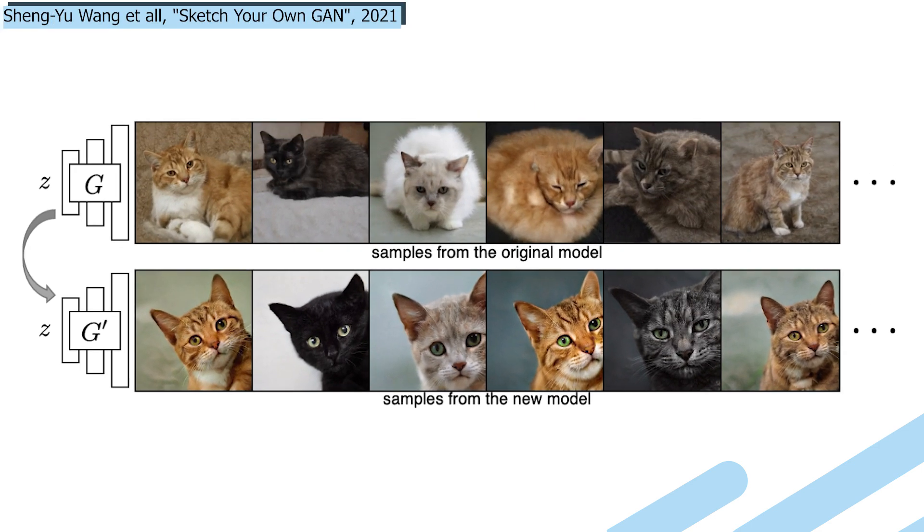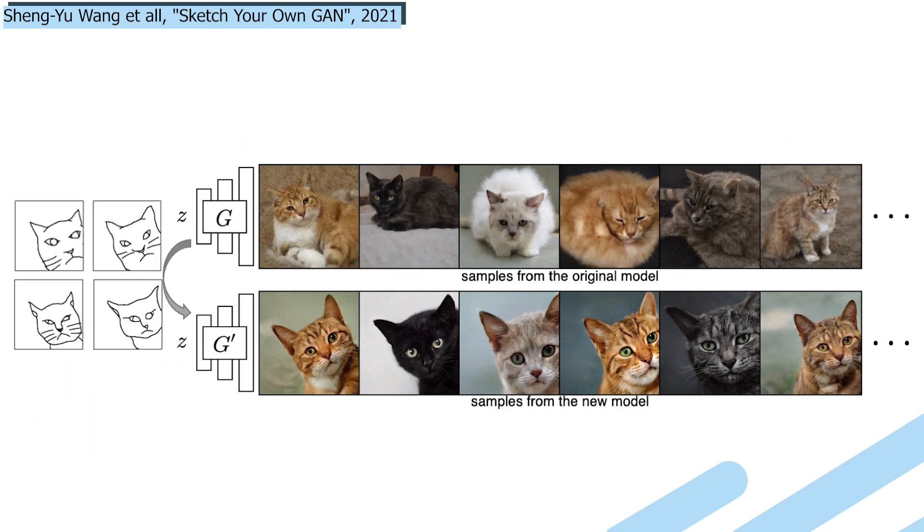Instead, this new method by Sheng Yu Wang et al from Carnegie Mellon University and MIT, called Sketch Your Own GAN, can take an existing model, for example a generator trained to generate new images of cats, and control the output based on the simplest type of knowledge you could provide it: hand-drawn sketches. Something anyone can do, making GAN training a lot more accessible.